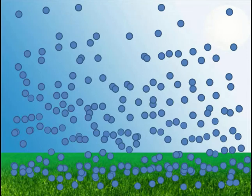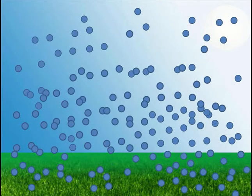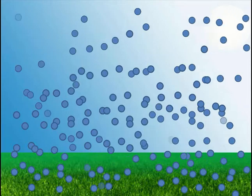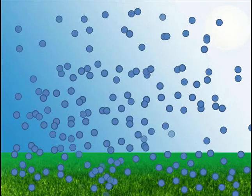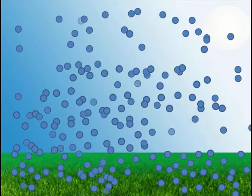The higher you go in the atmosphere, the lower the air pressure becomes. Air pressure is not exactly the same everywhere, though. This is because winds will begin to blow and stir up the atmosphere. Also, these molecules will be heated and cooled as they are blown around.